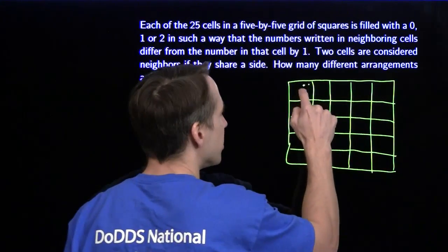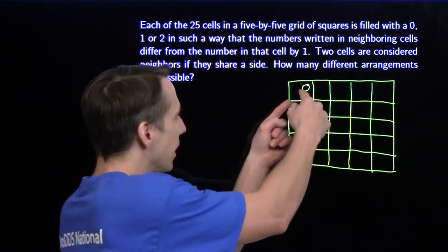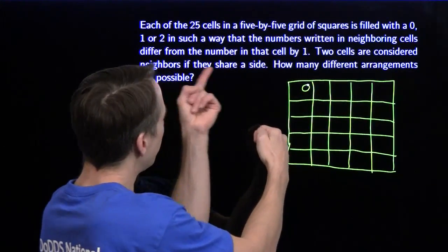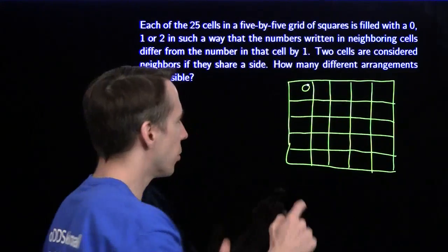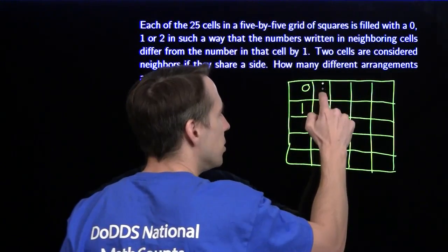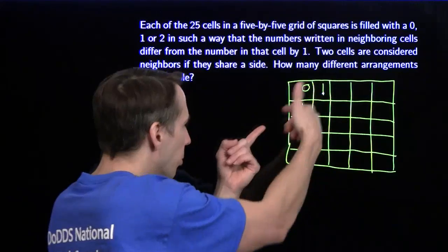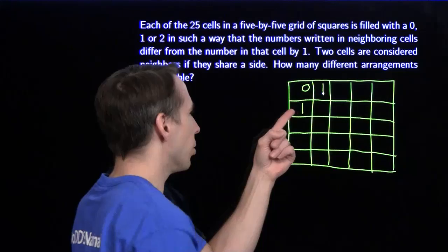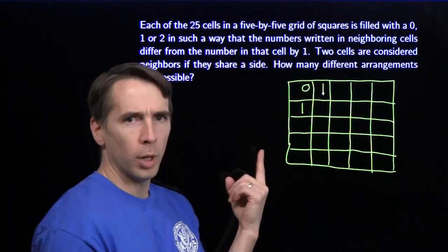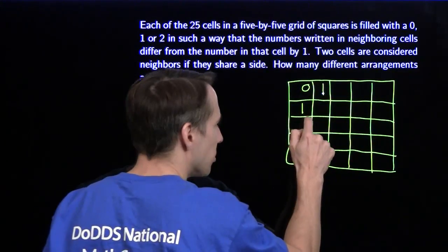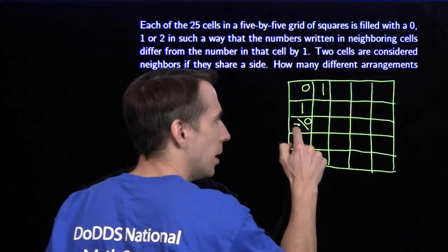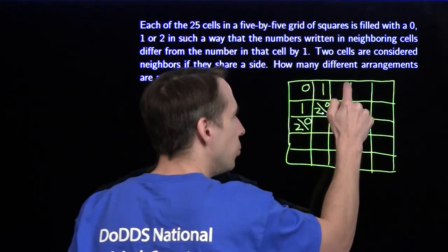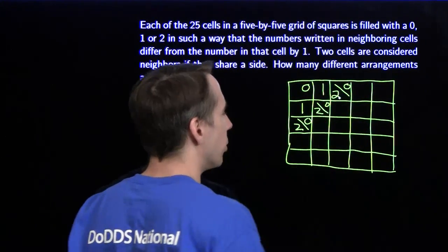I'll start in the upper left — I'll throw a zero in here. What can be next to zero? It has to differ from the zero by one, so our only options in these two neighboring cells are ones. Now let's go one more diagonal out to the cells that neighbor the one. They have to differ from the one by one, so each of these cells has to be a zero or a two. It can't be a one. I do have two choices for each of these cells — each one could be a zero or a two.